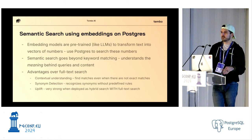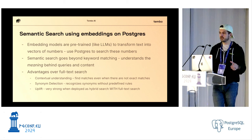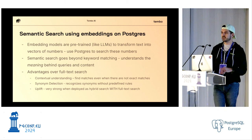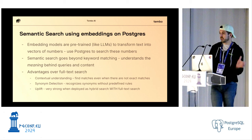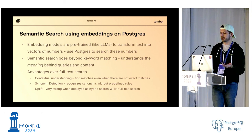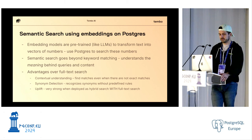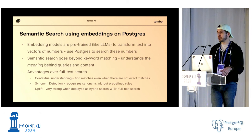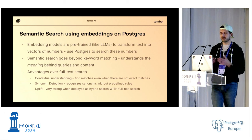A little bit about semantic search: there's full-text search or keyword search, where you're looking in your database to try to match keywords. But in the last ten years or so, various transformer models trained on large amounts of data have become widely available. We can use those models to take text, transform it into embeddings — basically turn text into numbers — and then do math on the numbers to search. Semantic search is useful because you don't necessarily require keyword matching; you can search for 'soda' and get Coca-Cola, or search for 'bags of potato chips' and get various types, even though the words don't exactly match.